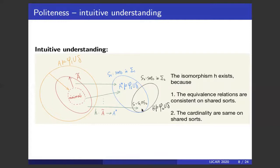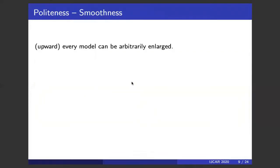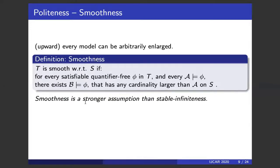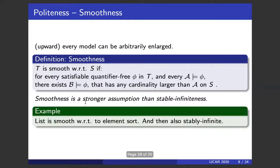The upward direction is called smoothness. A theory T is smooth with respect to S if for every satisfiable quantifier-free φ in T and every satisfying interpretation A, there exists a satisfying interpretation B with any cardinality larger than A on S — meaning we can enlarge the domain arbitrarily. Smoothness is stronger than stable infiniteness: stable infiniteness only requires infinite domain, but smoothness requires arbitrarily large cardinality. The theory of list is smooth with respect to the element sort because element sort is uninterpreted and can be interpreted with arbitrarily large cardinality.